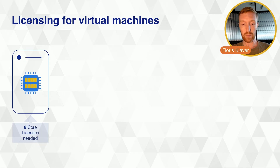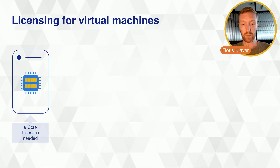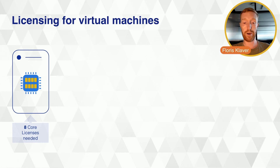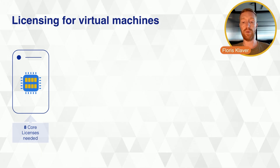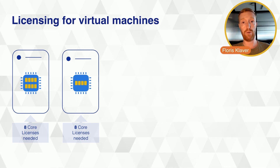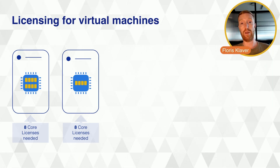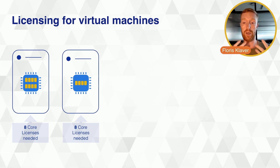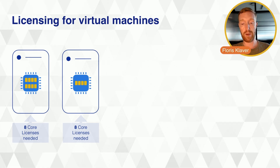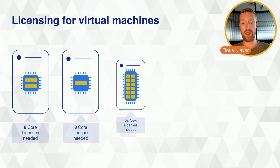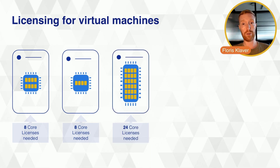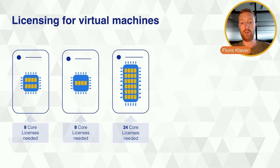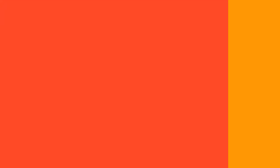Here are three VM licensing examples. First, a VM with eight cores requires eight core licenses. Second, a VM with only four cores still requires eight core licenses, because there is an eight-core-per-VM minimum. Third, a large VM with 24 cores requires all 24 cores to be licensed, so you would need 24 core licenses.